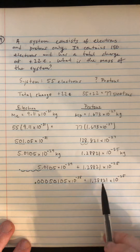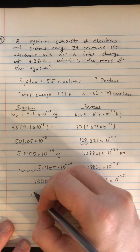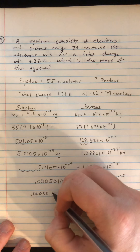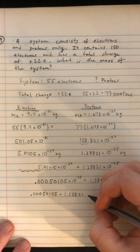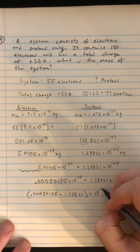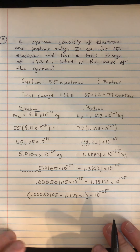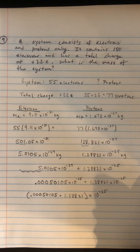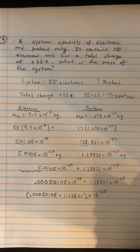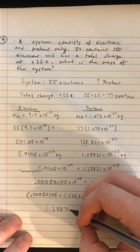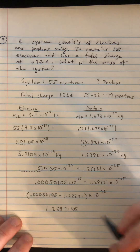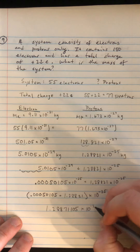Now they have the same exponent, so we factor out 10⁻²⁵ and add: 0.00050105 plus 1.28821 gives us 1.28871105 times 10⁻²⁵ kilograms. That's our answer for the total mass of the system.